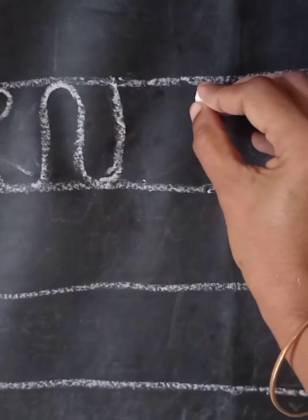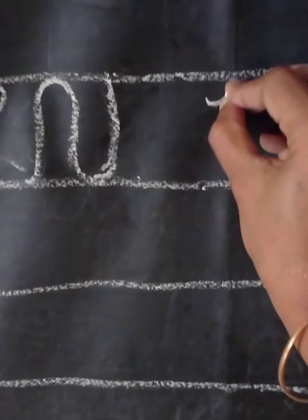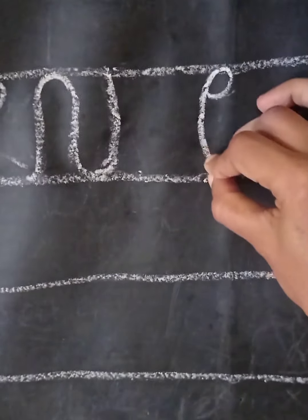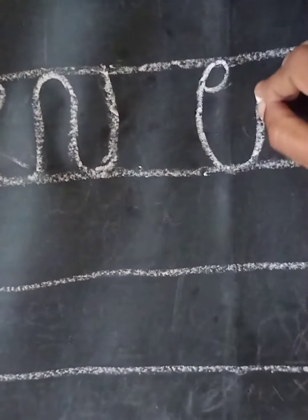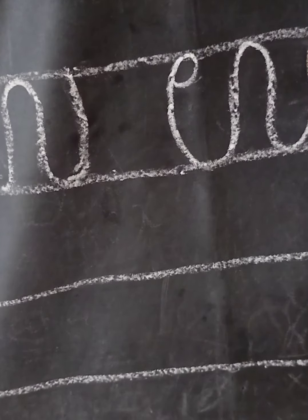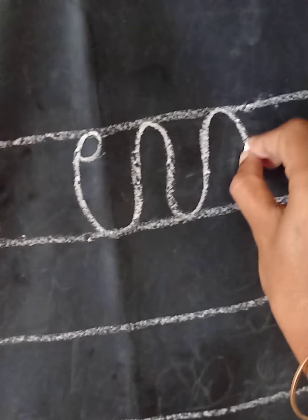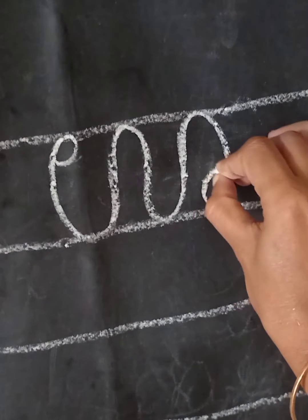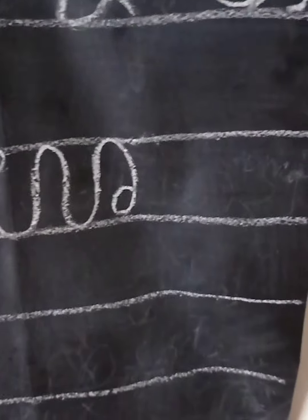The next letter is Ū. Ū as in Uta. Uta in Kannada means meals.